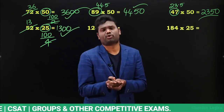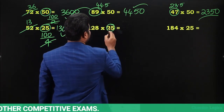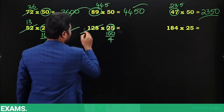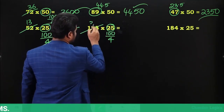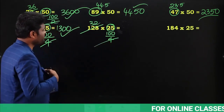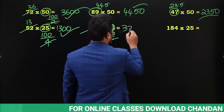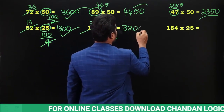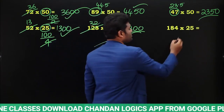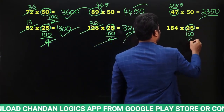Here also, 25 can be written as 100 by 4. Once you simplify 128 by 4, it gives 32 times. So 32 into 100 is going to be 3200. The answer is 3200. Similarly, for the next one, we write 25 as 100 by 4.